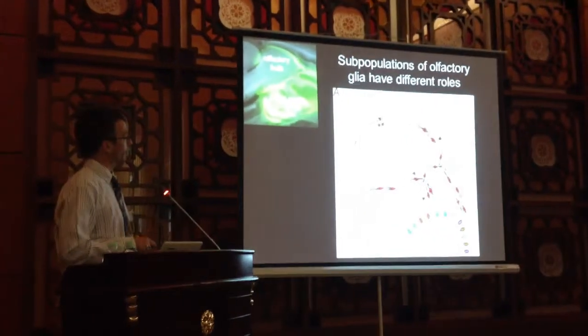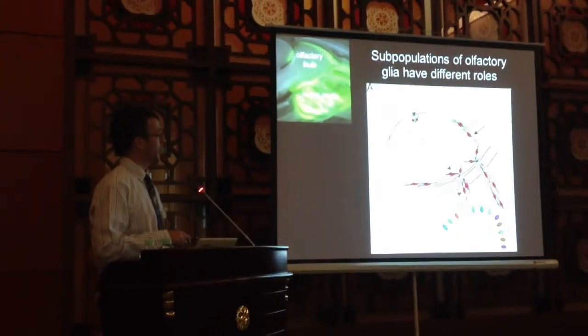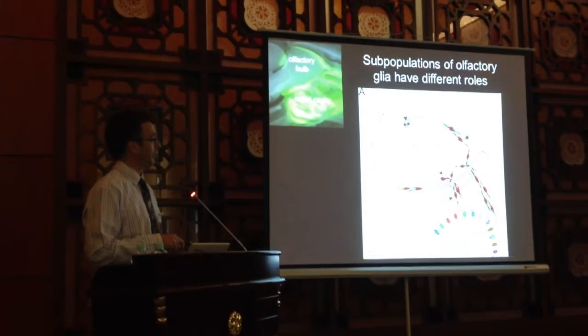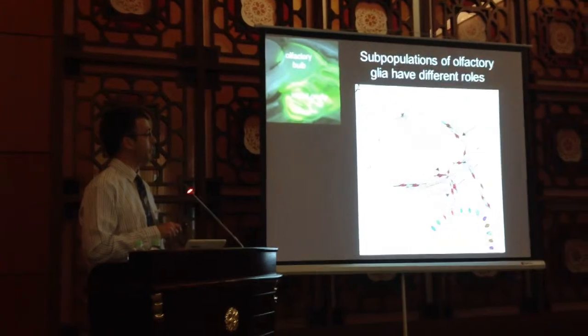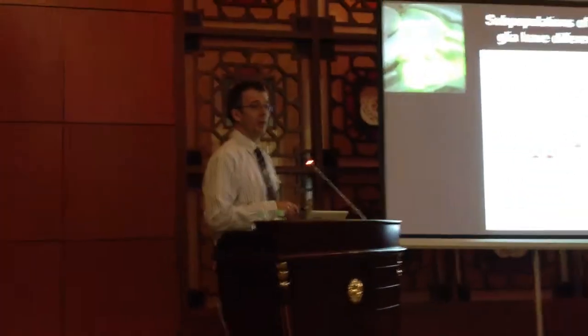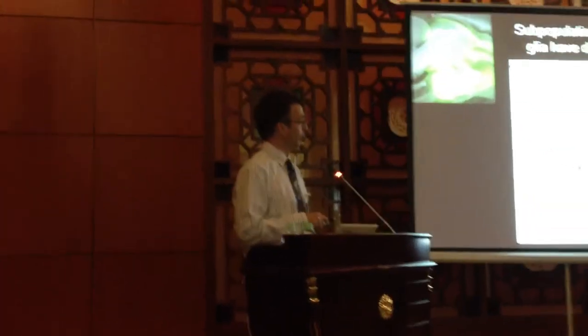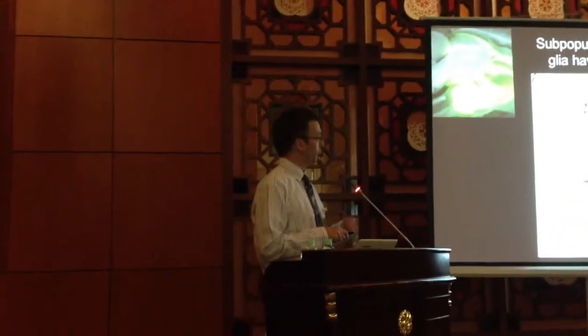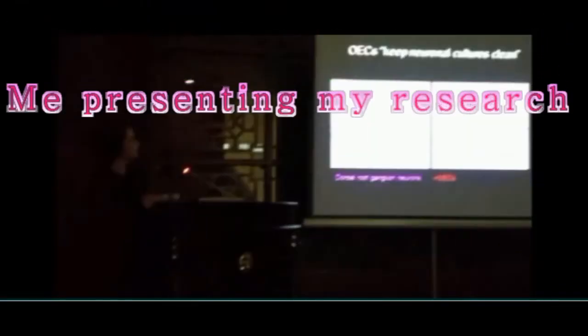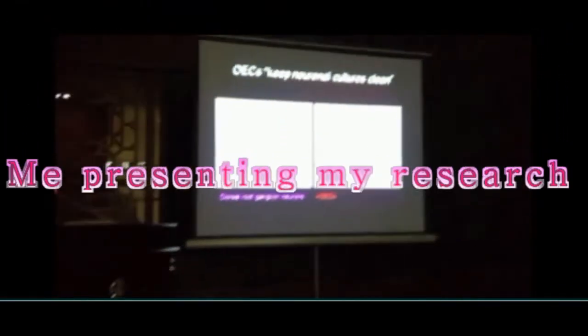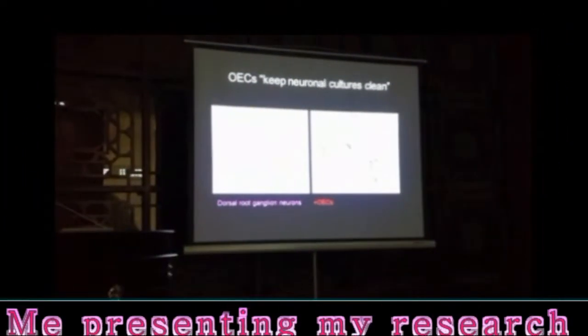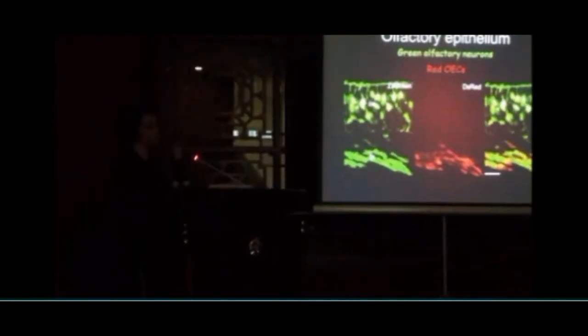This is a schematic of your olfactory system. When the nerve cells send axons up into your olfactory bulb, those nerve bundles are ensheathed and surrounded by olfactory ensheathing cells. Here's an example using dorsal root ganglion neurons — we've done this with brain neurons as well. If you have OECs present, not only do we get much more axon outgrowth, but the culture is also incredibly clean.